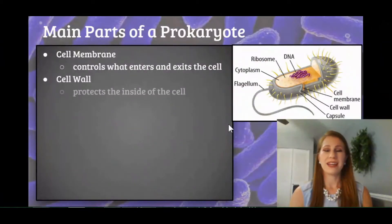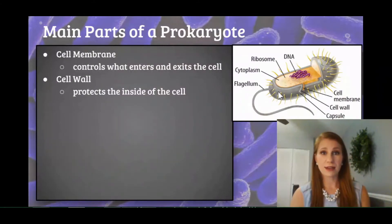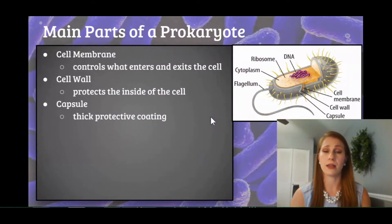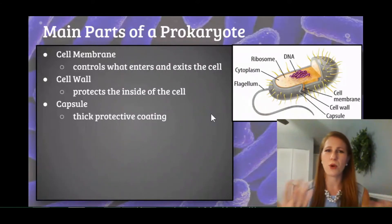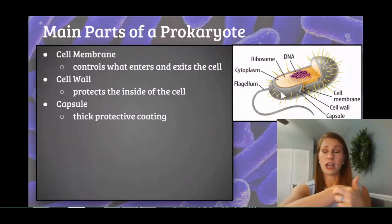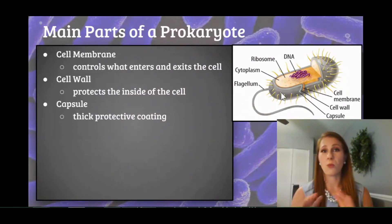A cell wall is pretty much what it sounds like — it's a wall around the outside of the bacterium that protects everything inside of it, kind of like a castle wall would. In addition, bacterial cells also have a capsule, which is a really thick protective coating on the outside of the bacteria. It can be thinner or thicker depending on the prokaryote, but its main job is protection. Prokaryotes are single-celled — they don't have the benefit of something like skin, muscles, or bones to help protect their inside, so they need a capsule to help protect them.